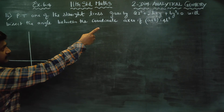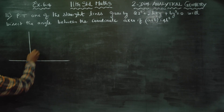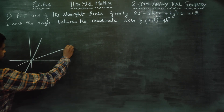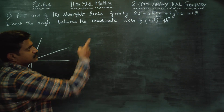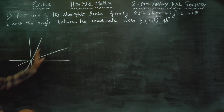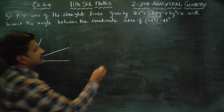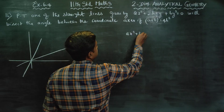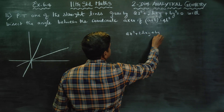The equation Ax² + 2hxy + by² = 0 represents a pair of straight lines passing through the origin. For a pair of straight lines passing through the origin, the formula is Ax² + 2hxy + by² = 0.